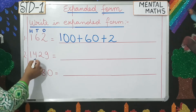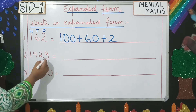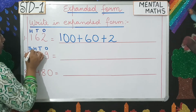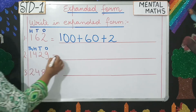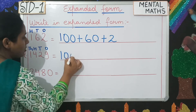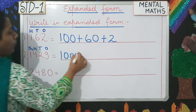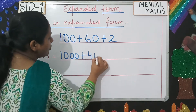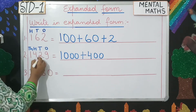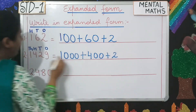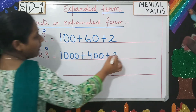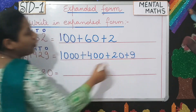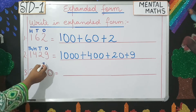Number two: 1,429. This is the 1s place, this is the 10s, this is the 100s, and this is the 1,000s. So to the 1,000s place we'll add three 0s after writing the first digit, then put a plus sign, then the second digit 4 with two 0s for 100s place, then write 2 with one 0 for 10s place, and at last the number 9 with no 0s because it is the 1s place.